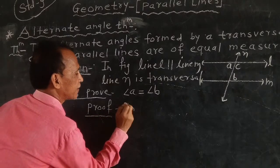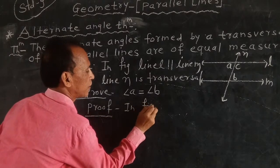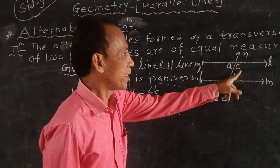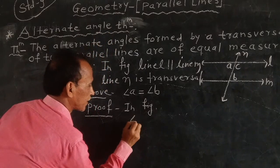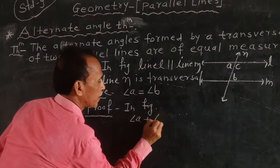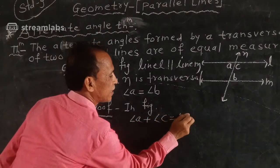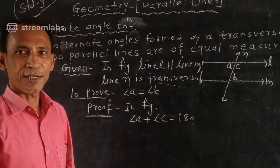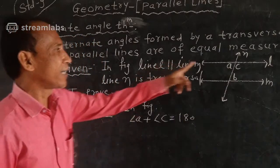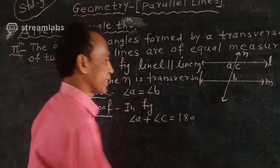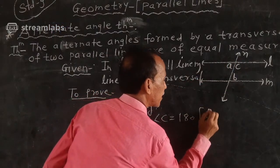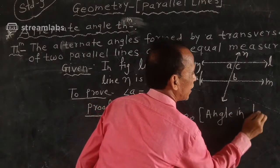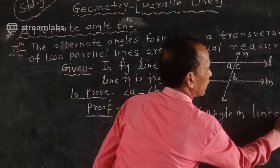In the figure, angle A plus angle C is equal to 180 degrees. What is the reason? Angles in a linear pair.